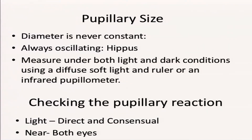Pupillary size is variable — in bright light you'll get a different reading than at a slit lamp or in mesopic conditions. There is always a slight alternating change in size called hippus. You can use a simple ruler to measure size, and we're specifically looking at anisocoria. Both pupils could be mid-dilated or both constricted, but anisocoria is very important because it's quite glaring when you look at the pupil size.